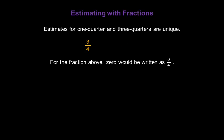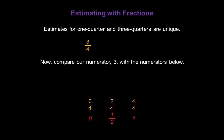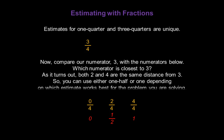Now let's look at 3 quarters. For that fraction, 0 would be written as 0 over 4, 1 half would be 2 over 4, and 1 would be written as 4 over 4. Comparing the numerator 3 with those reference numerators, both 2 and 4 are the same distance from 3. So you can use either 1 half or 1, depending on which estimate works best for the problem you're solving. So 3 quarters can either be 1 half or 1.